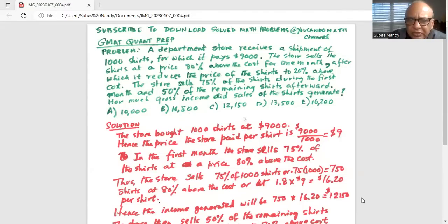The store bought, and there are five options of course. The store brought 1,000 shirts at $9,000, and the price paid per shirt is $9 per shirt.